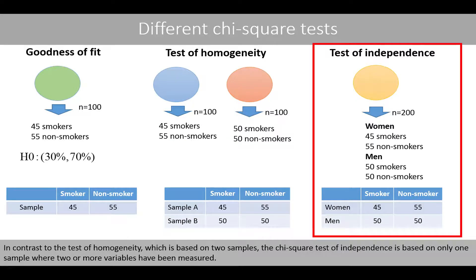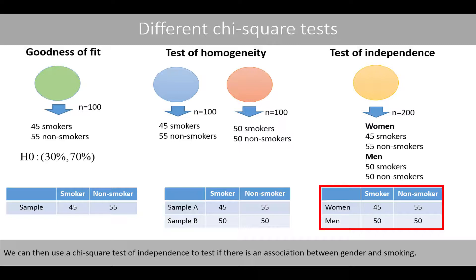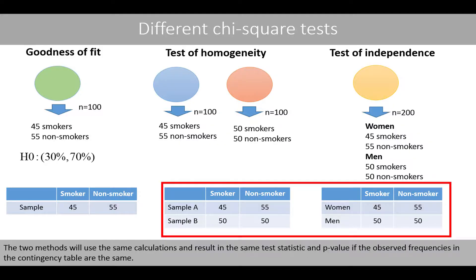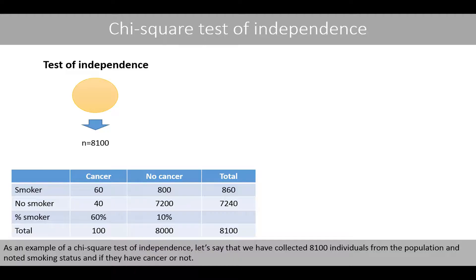In contrast to the test of homogeneity, which is based on two samples, the chi-square test of independence is based on only one sample, where two or more variables have been measured. For example, suppose we have collected 200 random individuals from the population and recorded their gender and if they are smokers or not. We can then use a chi-square test of independence to test if there is an association between gender and smoking. As an example of a chi-square test of independence, let's say that we have collected 8,100 random individuals from the population and noted smoking status and if they have cancer or not.